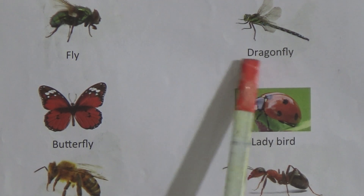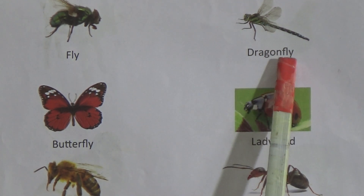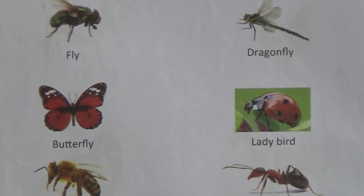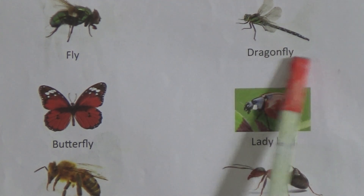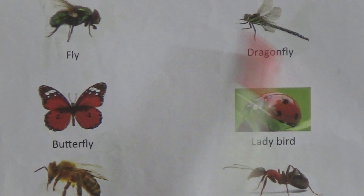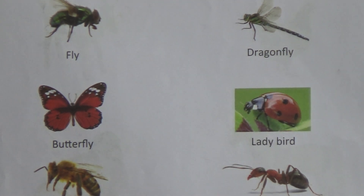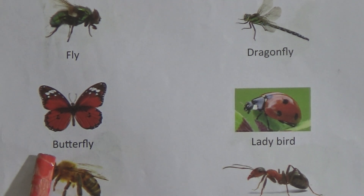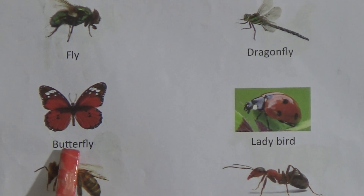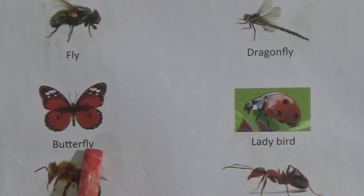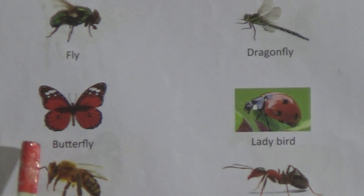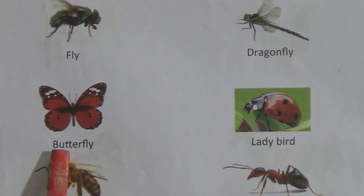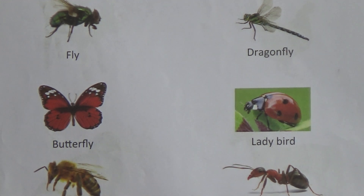Next one here is butterfly. This one is butterfly and the spelling of butterfly is B-U-T-T-E-R-F-L-Y, butterfly.